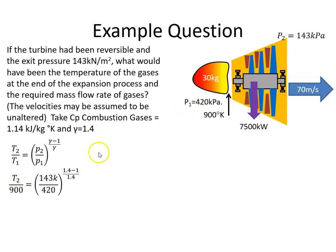Plugging in the values, T1 is 900, P2 is 143 kilopascals, P1 was 420 kilopascals. That should be a kPa there. They're going to cancel out anyway.